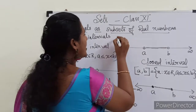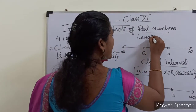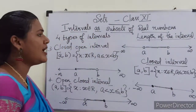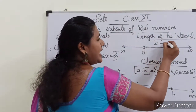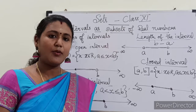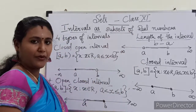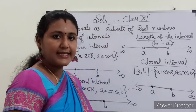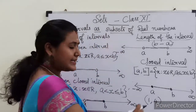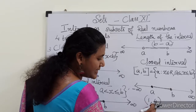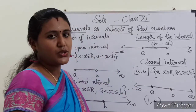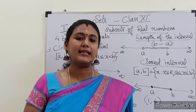Now we will learn one more concept: the length of an interval. For any type of interval — open, closed, or semi-open — the number b minus a is called the length of the interval. For example, for the open interval (1, 4), here a = 1 and b = 4, so the length is 4 minus 1, which equals 3.